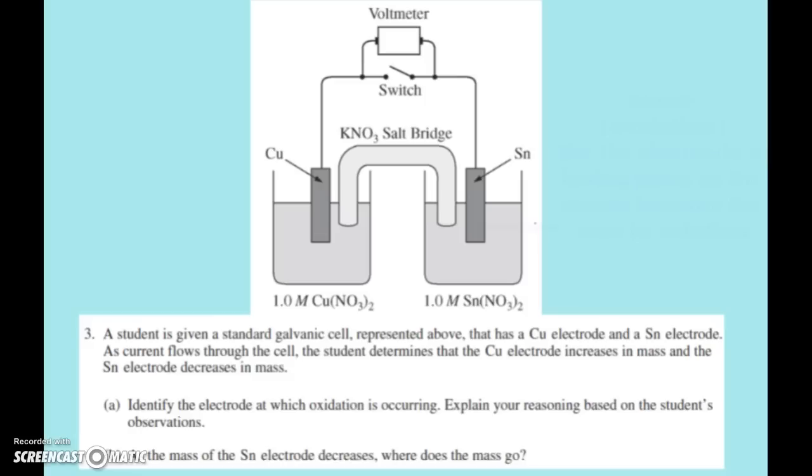Alrighty, we're looking here at question number three from the 2014 free response exam. You see that a student is given a standard galvanic cell represented above. There's a copper electrode, a tin electrode. As current flows through the cell, the student determines that the copper electrode increases in mass and the tin electrode decreases in mass.